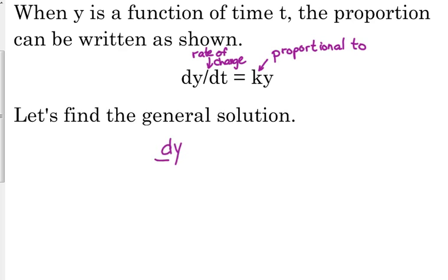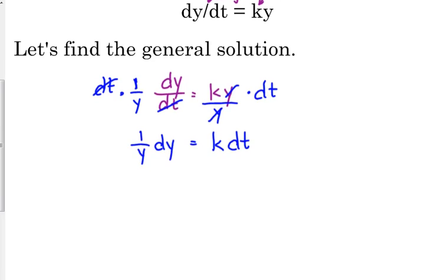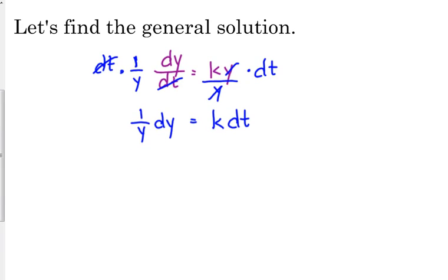So we have dy over dt is equal to k times y. We need y on the same side, and we need everything else on the other side. So in this case, we've got to divide by y or multiply by 1 over y to move that y on the right side. And then that dt needs to be on the other side. So we need to multiply both sides by the dt. So what we've got right now is 1 over y, dy, is equal to k dt. k is just a constant. It's our proportionality constant. So now we're going to integrate both sides. What's the anti-derivative of 1 over y? The natural log of y.